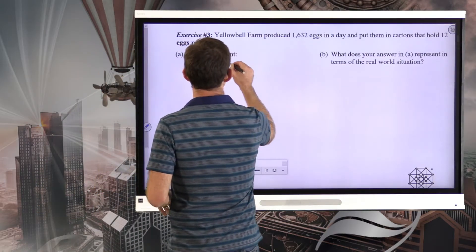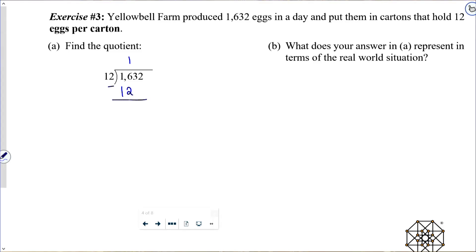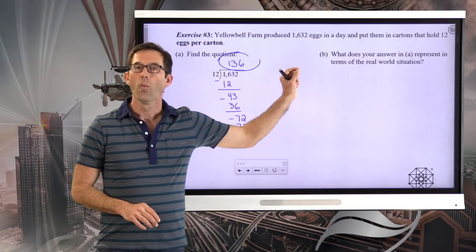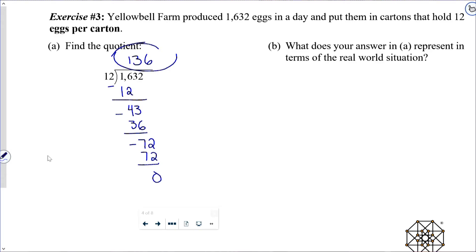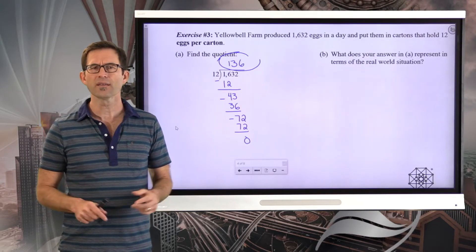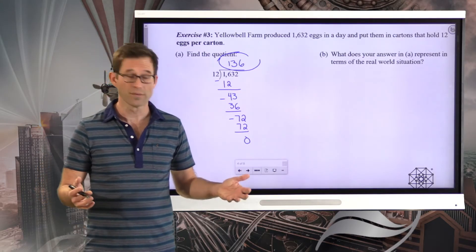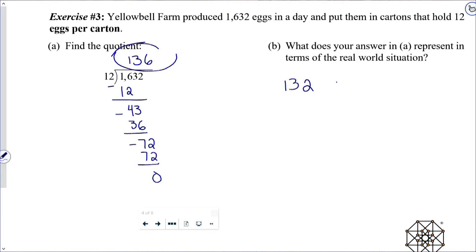All right, let's go through it. 12 goes into 16 one time, so I write down my 12 and subtract, I get four, bring down the three. 12 will go into 43 three times. Three times 12 is 36. When I subtract there, I get seven, bring down that final two, 72. Six times 12 is 72 and get zero. So my quotient is 136. Now the real question though, 136 what exactly? What does your answer represent in terms of the real world situation? It's going to tell us the number of cartons, 136 cartons of eggs.